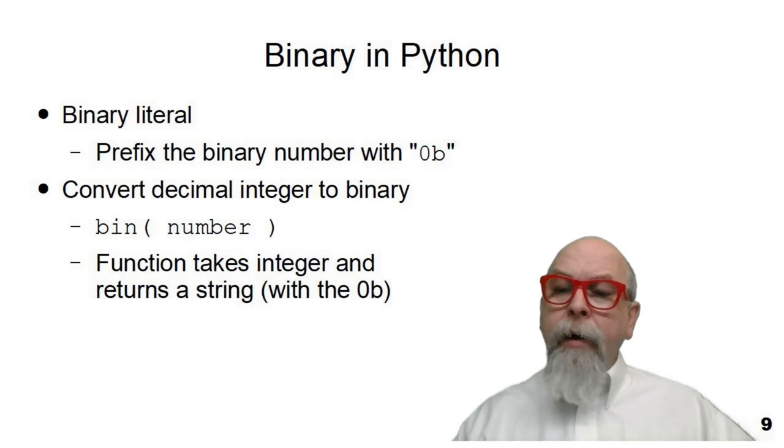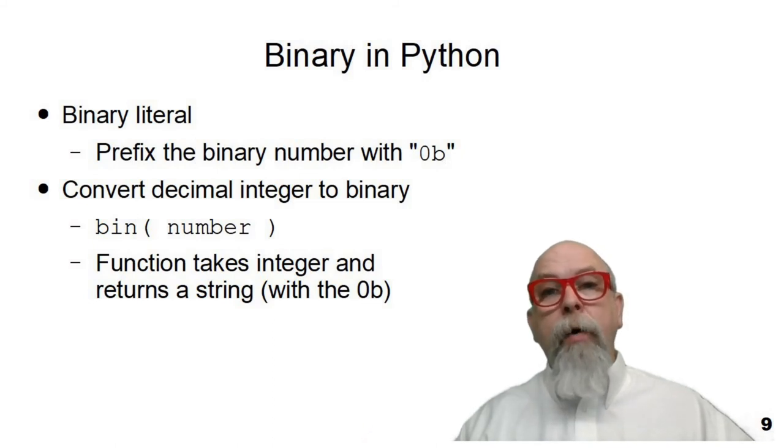Now, in Python, you can use binary numbers. And if you're in a program and you want to put a number in as a numeric constant, as an integer constant, you put the number 0 and the lowercase b in front of the number. So if I say 0b101, that's going to be the binary number 5, or 4 + 1. You can also convert an integer into a string that contains a binary by using the bin function. And we'll see these in the next slide.